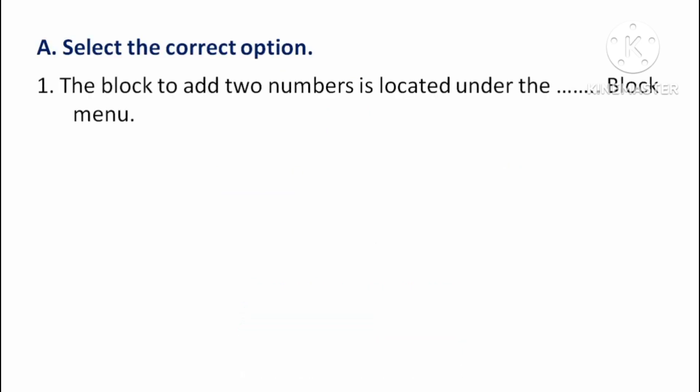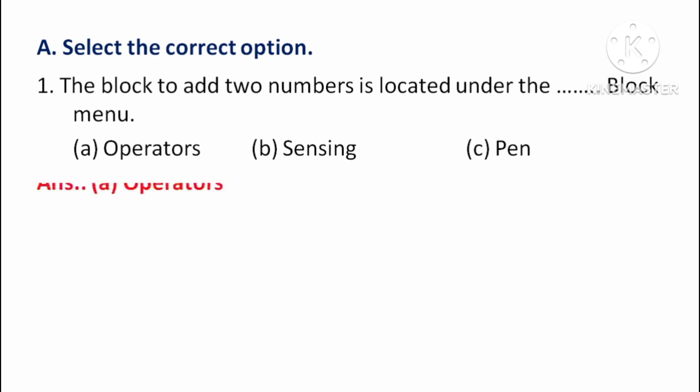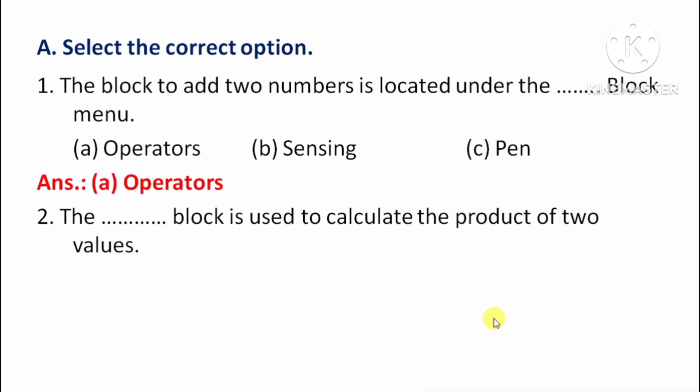First question: The block to add two numbers is located under which block menu? Which block menu mein present hota hai do numbers ko add karne ke liye? Option A: Operators, Option B: Sensing, Option C: Pain. The right answer is Option A: Operators.